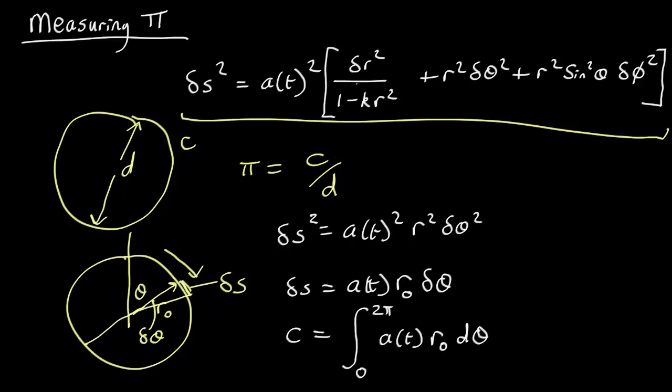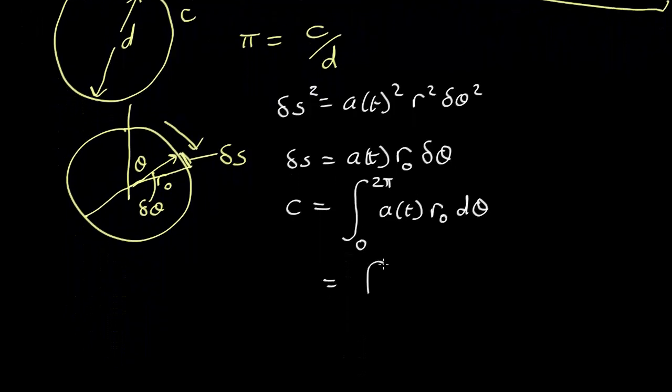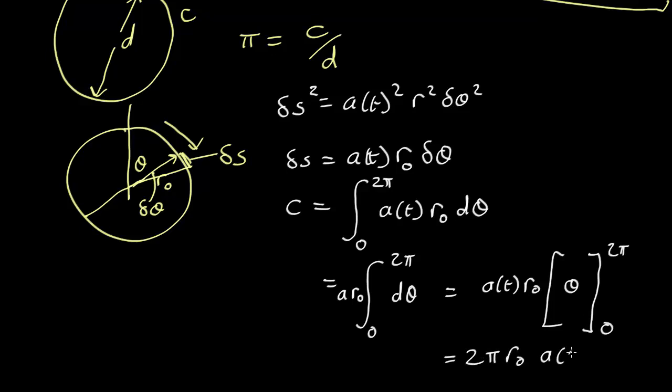Now what is this integral? Well a of t and r naught are both constants here. So this is just equal to the integral from 0 to 2 pi. Take the A and r naught outside d theta, which is just 1 times d theta. So that's just going to be theta from 0 to 2 pi.